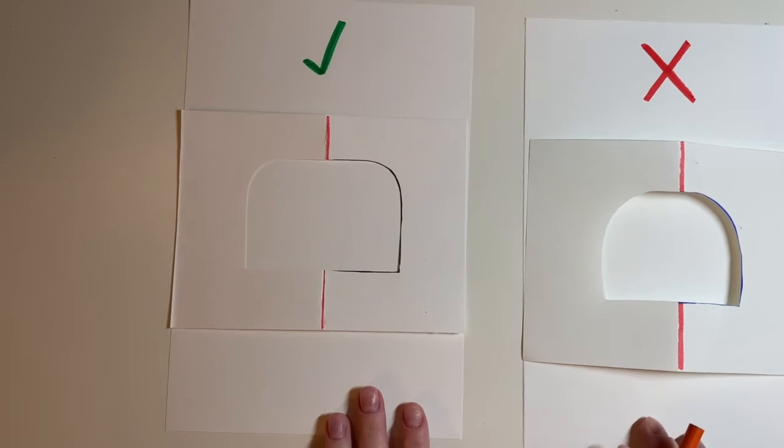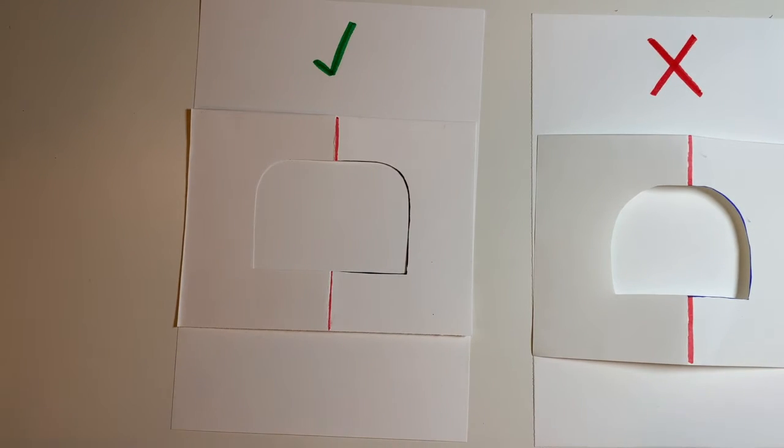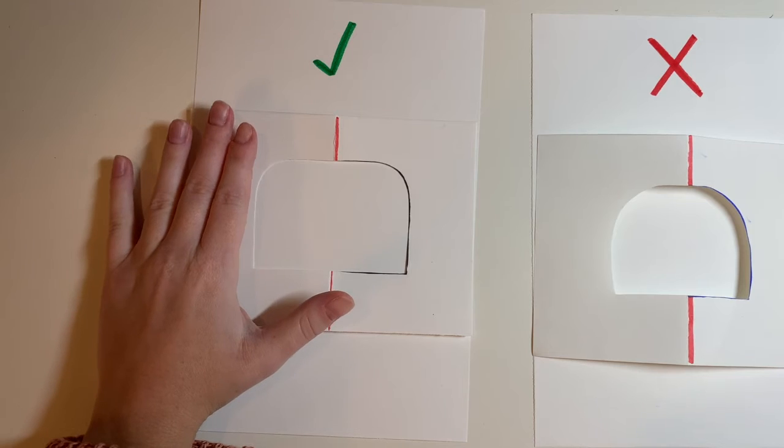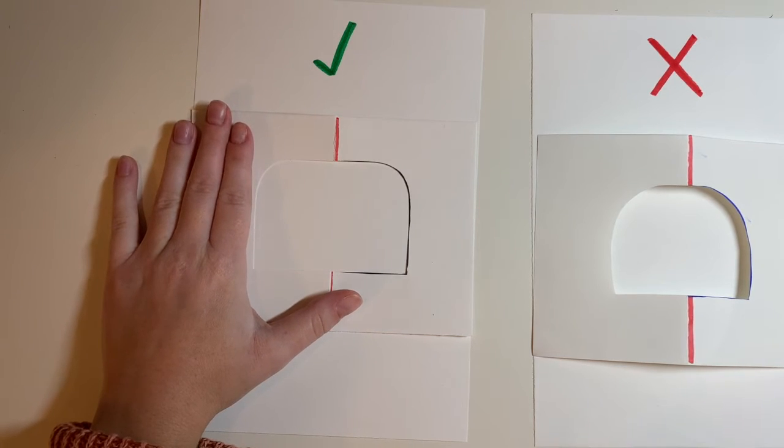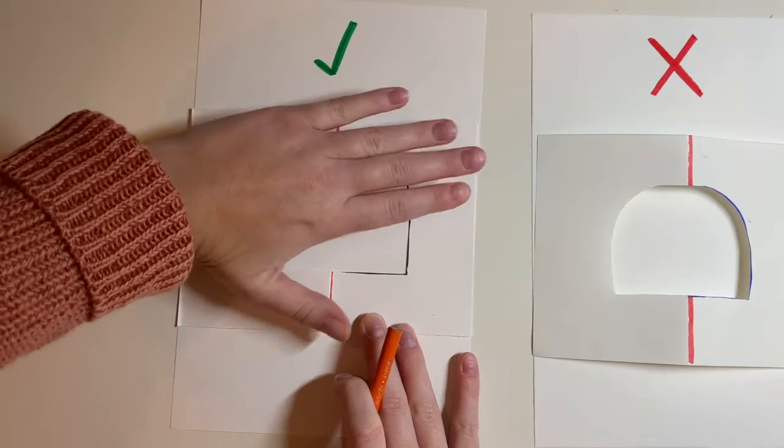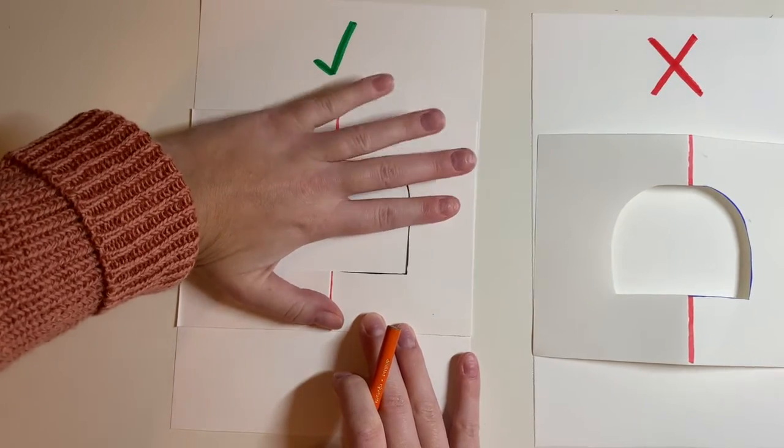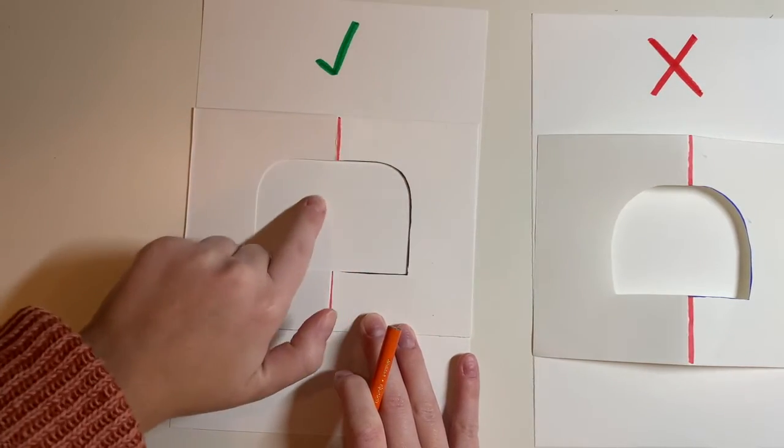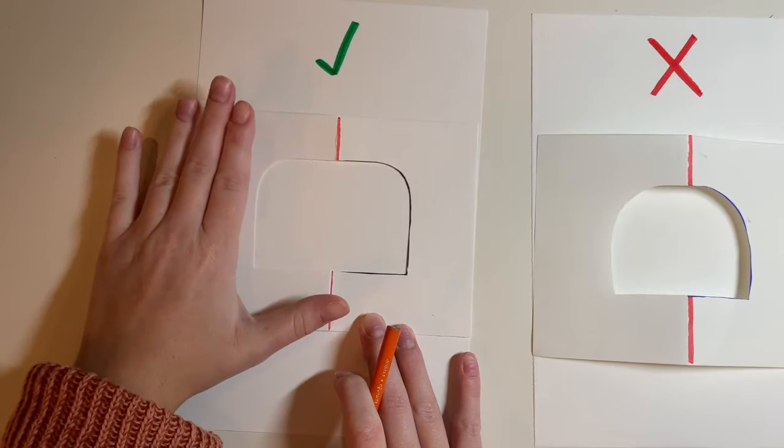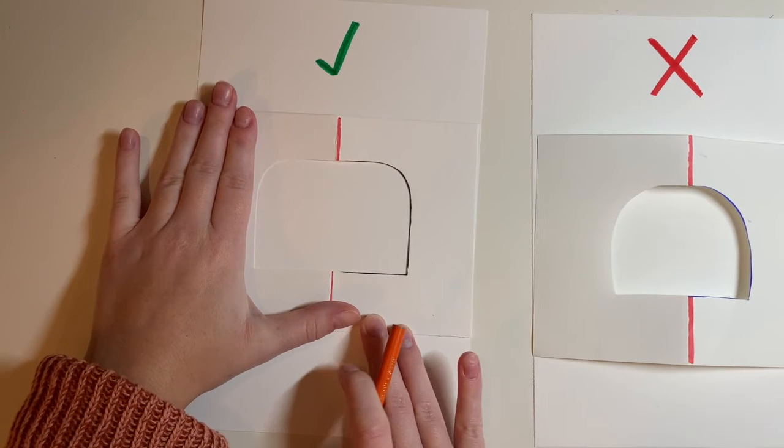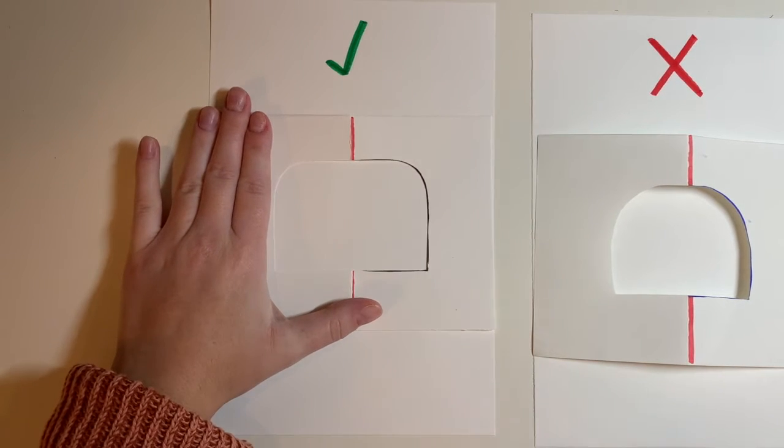When we're using our stencils, we want to make sure that we keep them in one place. Our hands aren't that big. They can't cover the whole stencil at the same time without covering up the place where we need to color. So we're going to need to move our hand as we fill in our stencil.